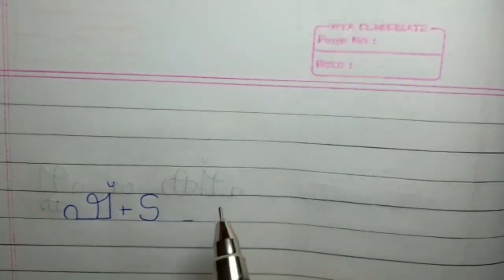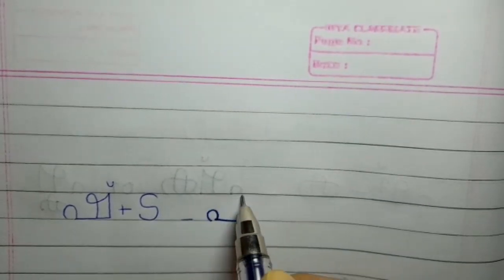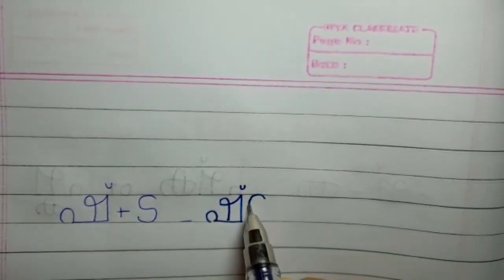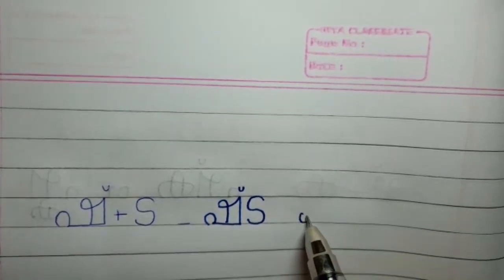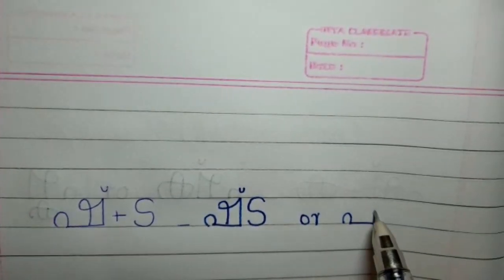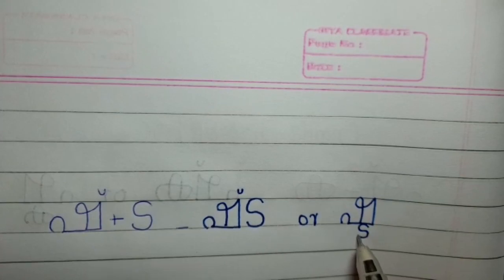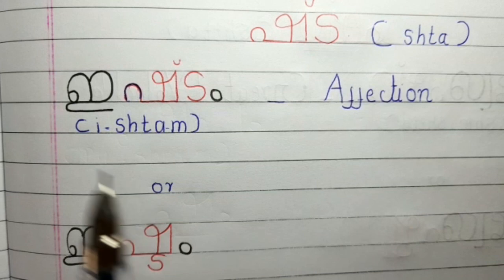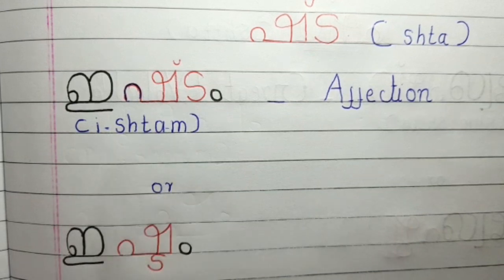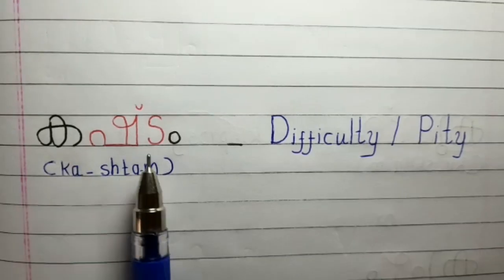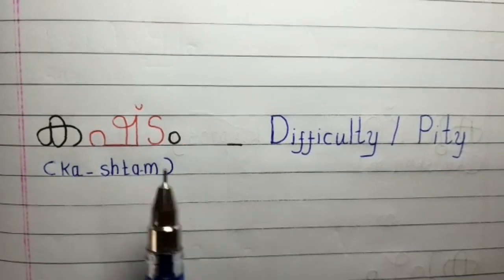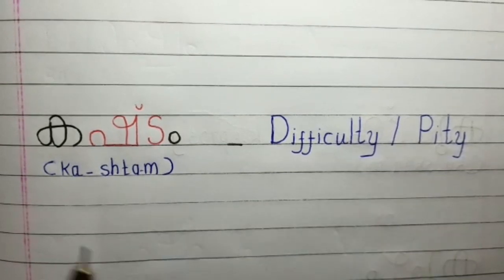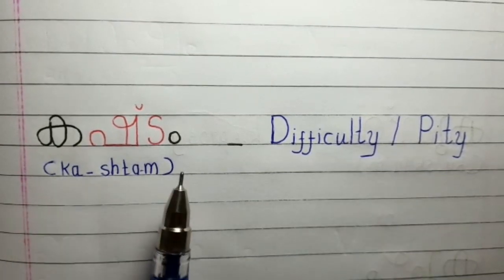She plus Ta, forming the compound 'Shta'. Ishtam — Ishtam means affection. Kashtam — Kashtam means difficulty or pity. Sh plus Ta.